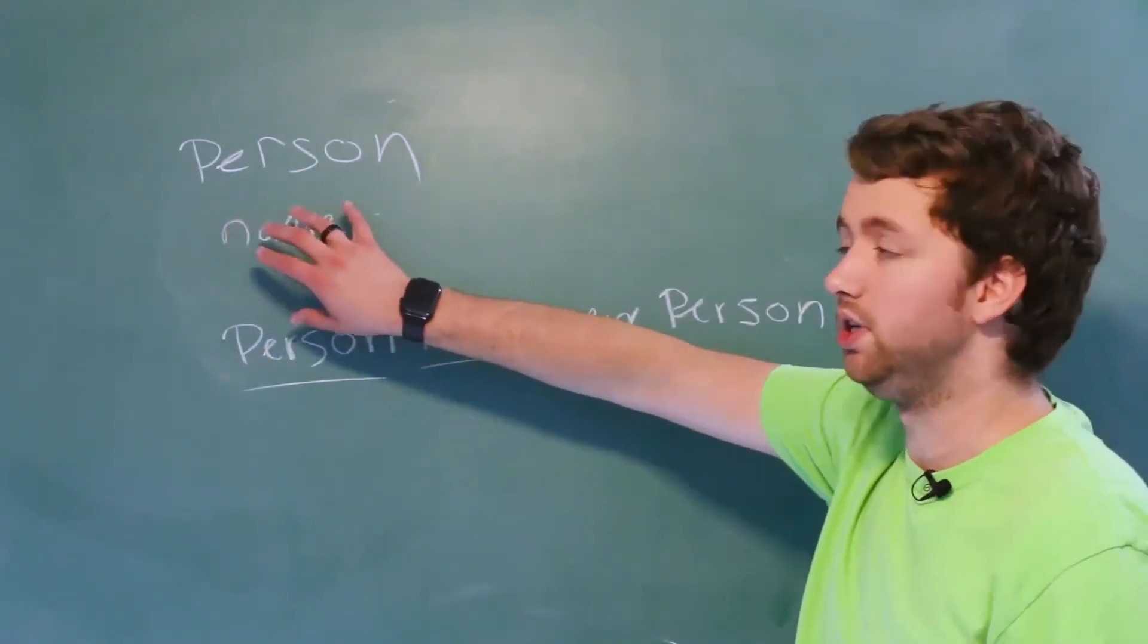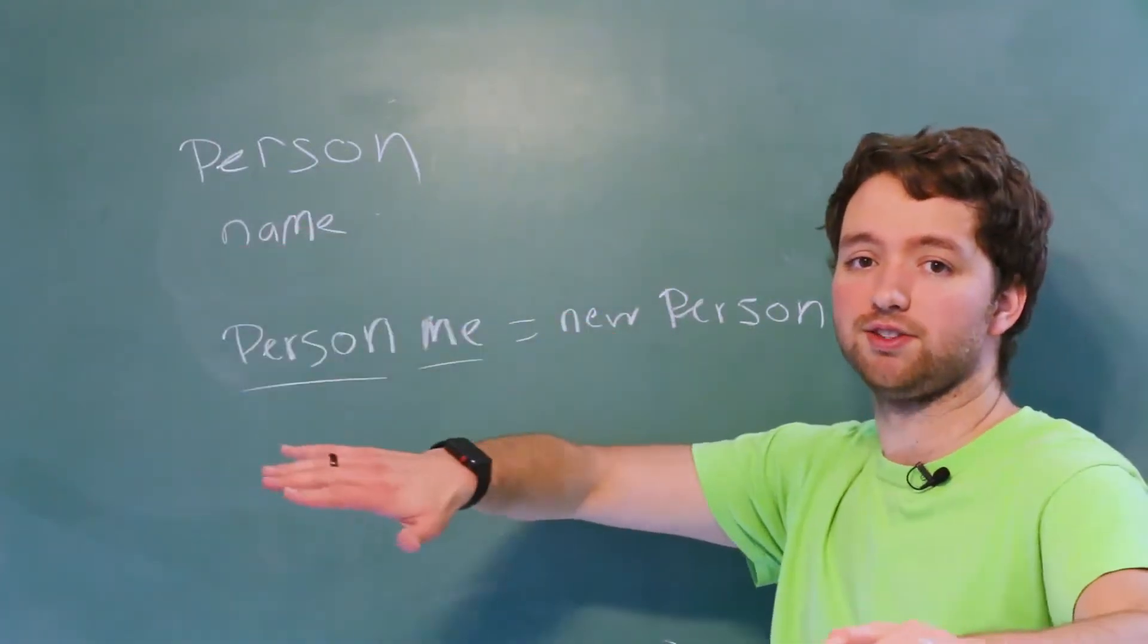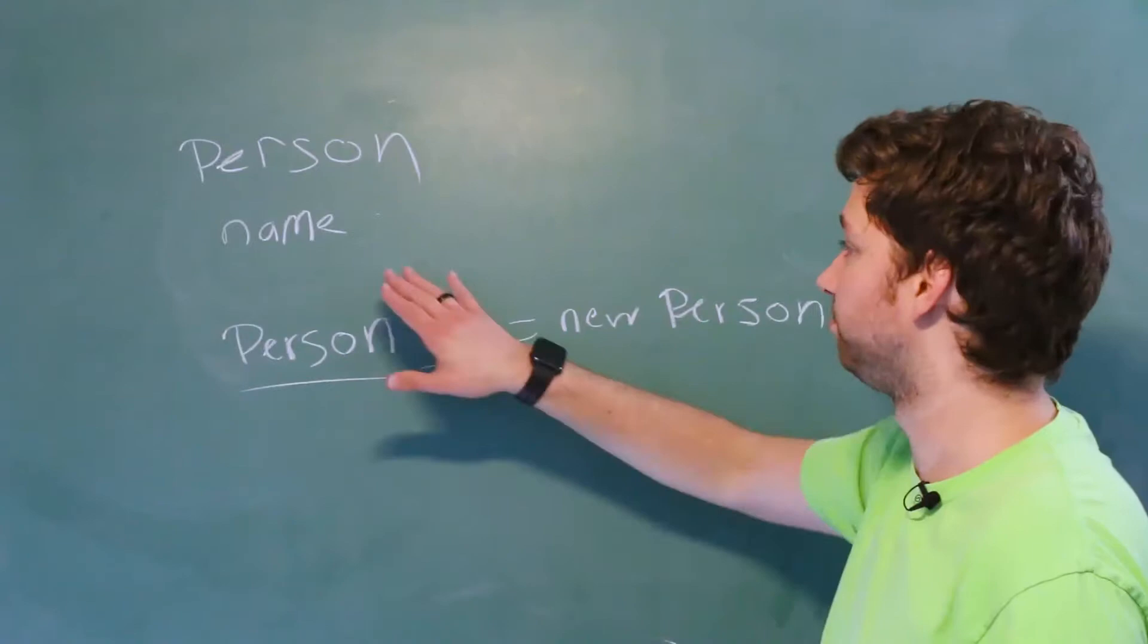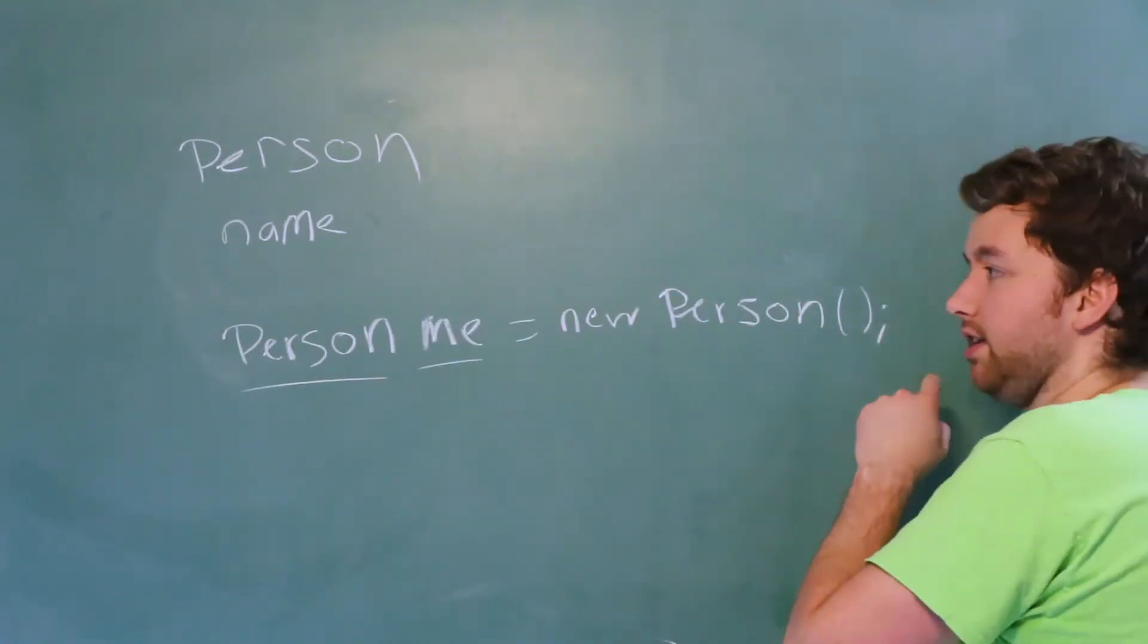And as a side note, this will need to be labeled public. We'll get into that soon when we talk about public versus private. But for now just follow along. We end this with parentheses and a semicolon.